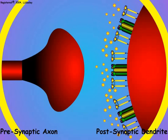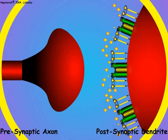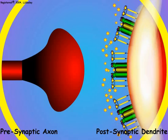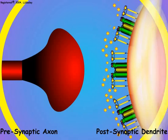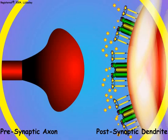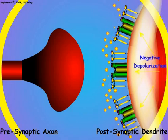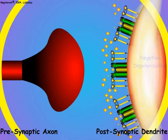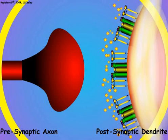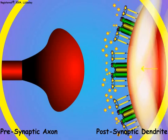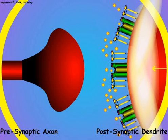Receptor binding of the neurotransmitter chemical stimulates the sodium channels to open and allows positive sodium ions to flow into the postsynaptic dendrite. Transfer of the sodium ions to the inside of the postsynaptic membrane results in the outside of the postsynaptic membrane becoming negatively charged in the region of the open sodium channels. The negative depolarization of the postsynaptic area spreads over the sensitive postsynaptic region and generates new action potentials that are carried away by the postsynaptic axon.